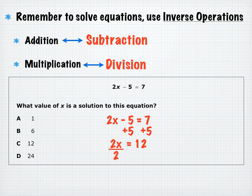To verify, plug 6 back in: 2 times 6 is 12, and 12 minus 5 is 7. Double-checking your answer is worthwhile, especially on a test — it would be unfortunate to miss a two-step equation like this due to a simple error.